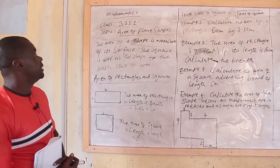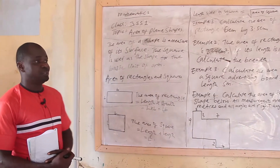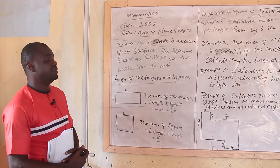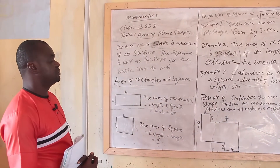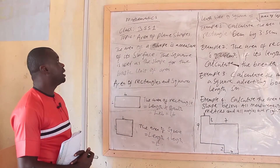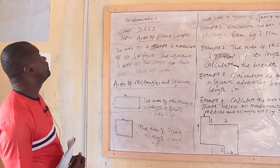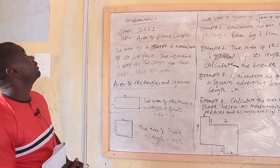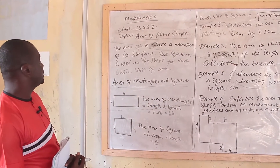When we talk about plane shapes, we are talking about the rectangle, square, triangle, trapezium, parallelogram, circles, etc.